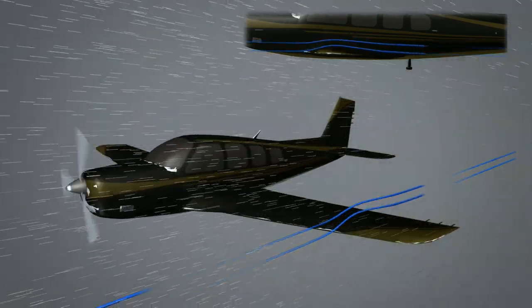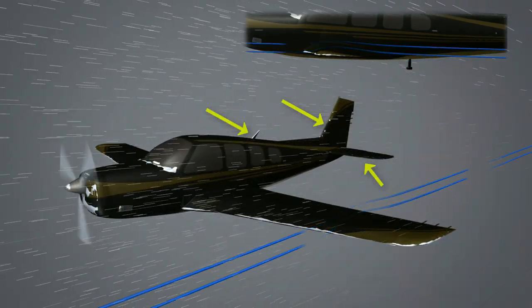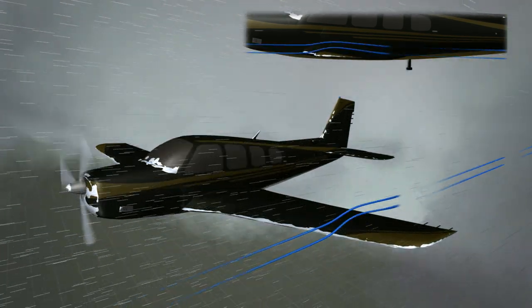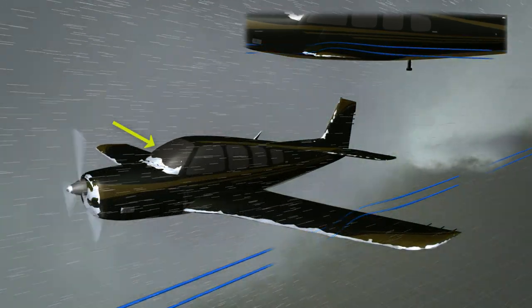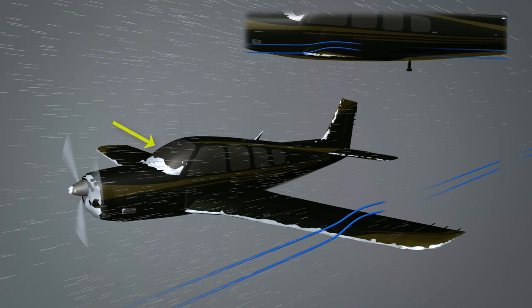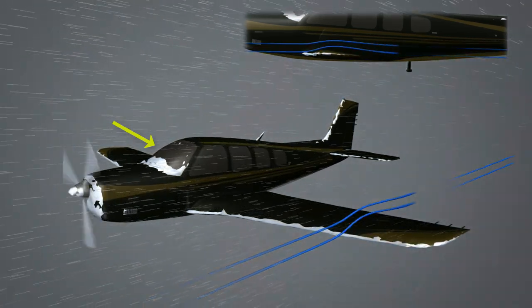Ice sticks first to surfaces with a small curvature radius. Things with large curvatures, like windscreens, accumulate ice the slowest, since they push the airflow with moisture around and away from their curved surface.